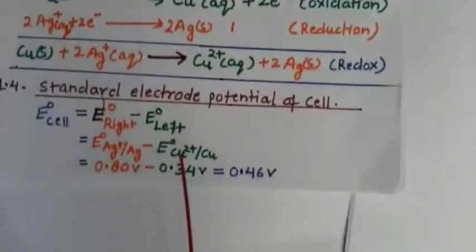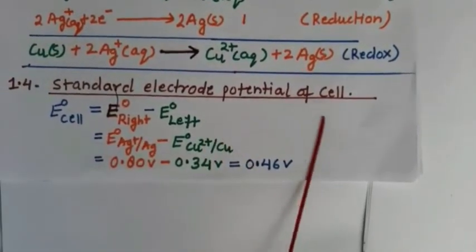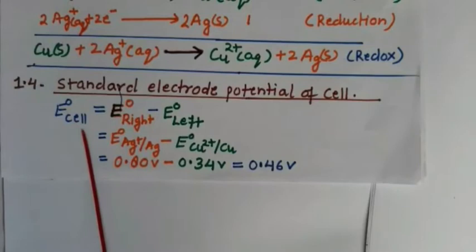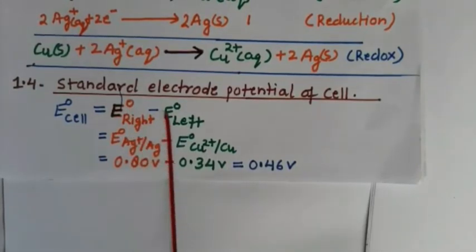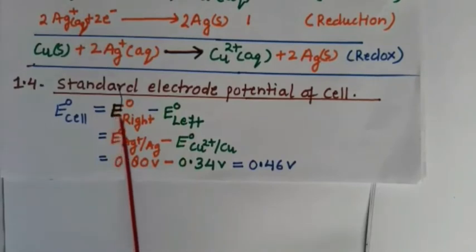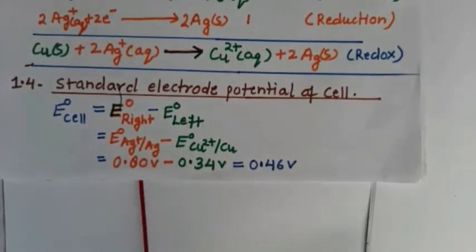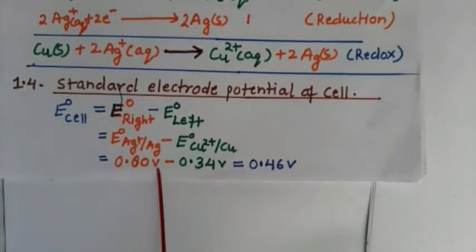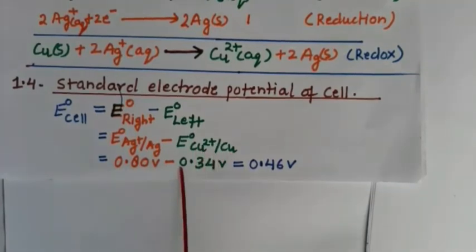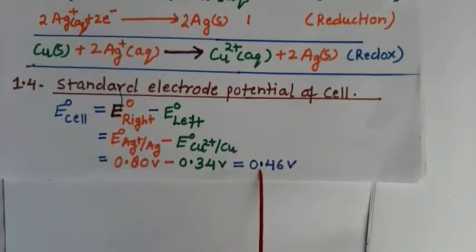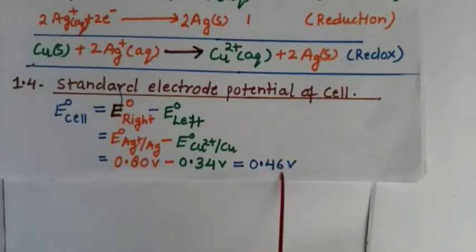The standard reduction potential of the silver electrode is 0.80 volt and that of the copper electrode is 0.34 volt. The electrode with the greater potential is written on the right hand side. Therefore, E°cell = E°(Ag⁺/Ag) − E°(Cu²⁺/Cu) = 0.80 − 0.34 = +0.46 volt.